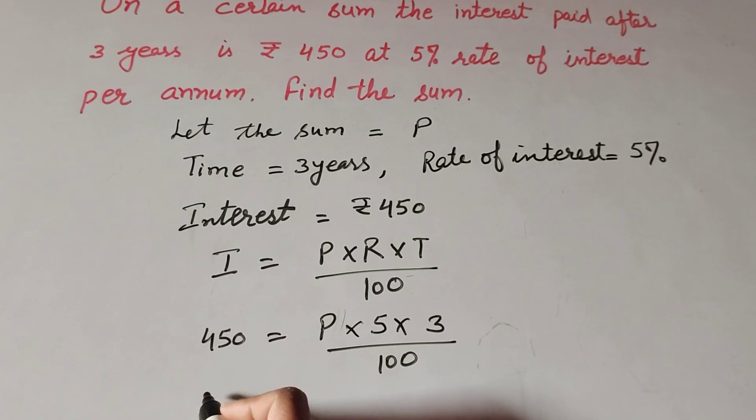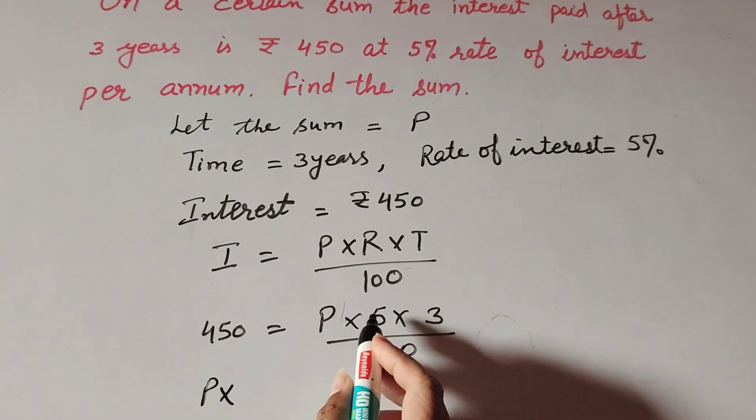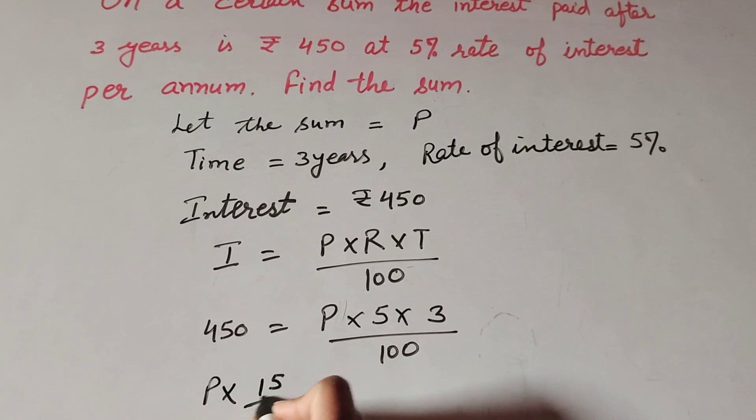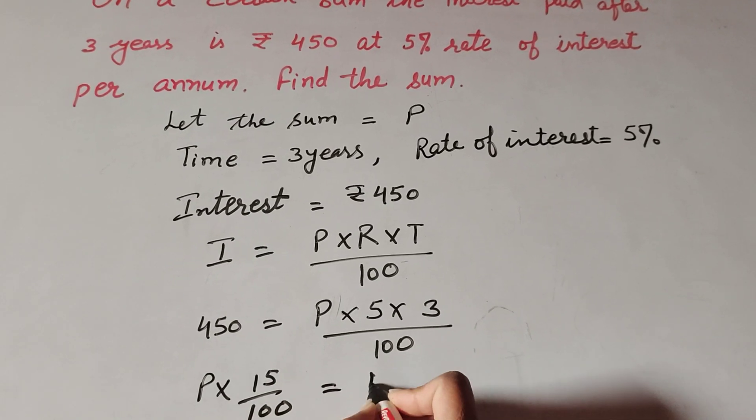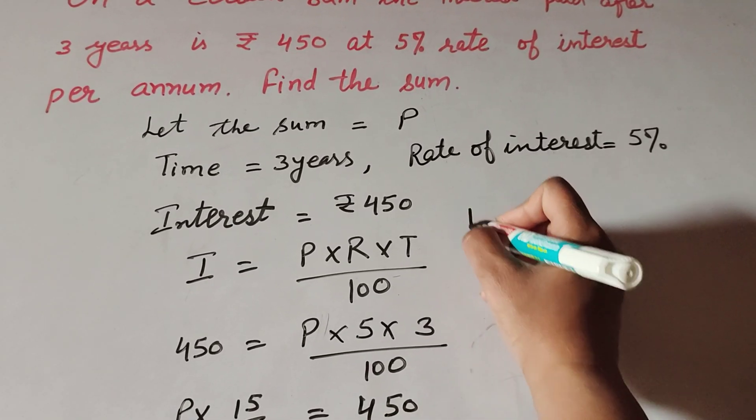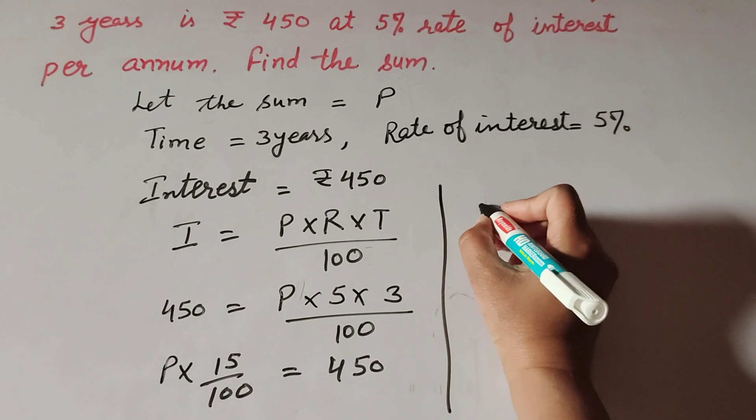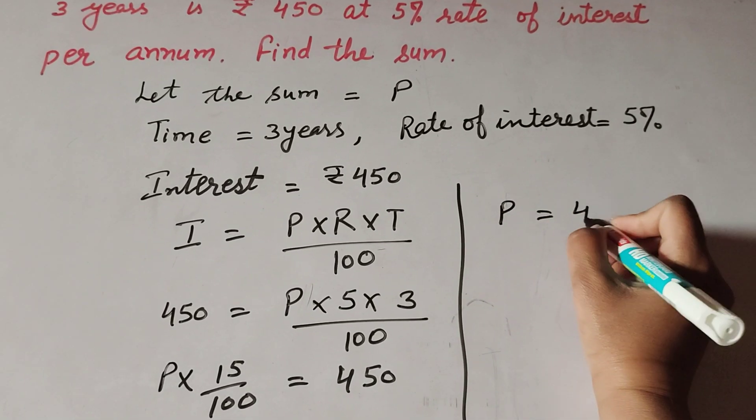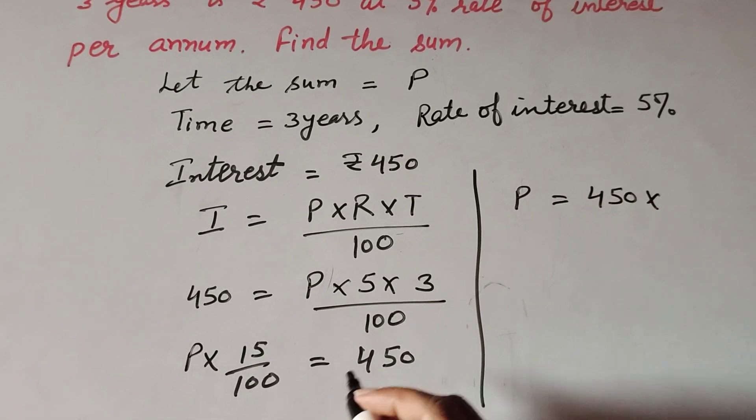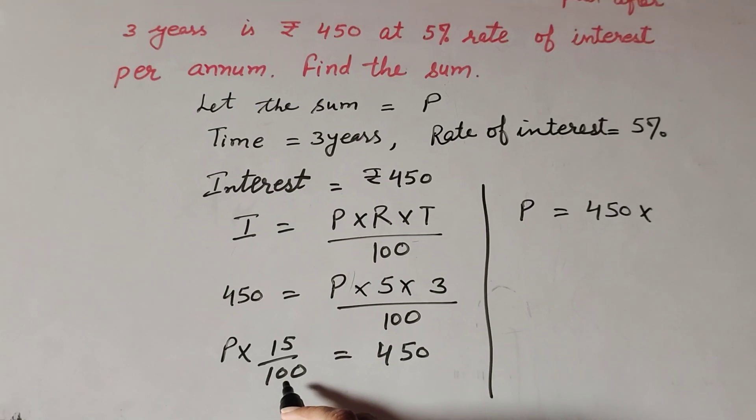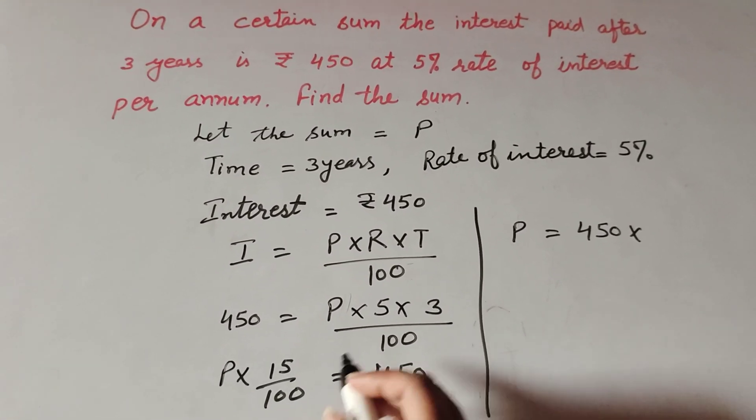So P × 5 × 3 = 15 over 100 equals 450. Therefore P × 15/100 = 450. Transposing to right hand side, we multiply its reciprocal, which is 100/15.